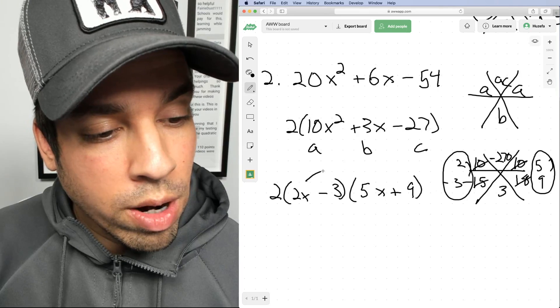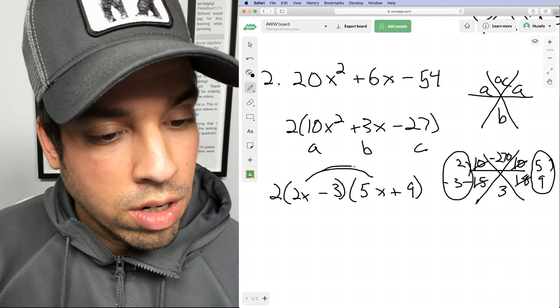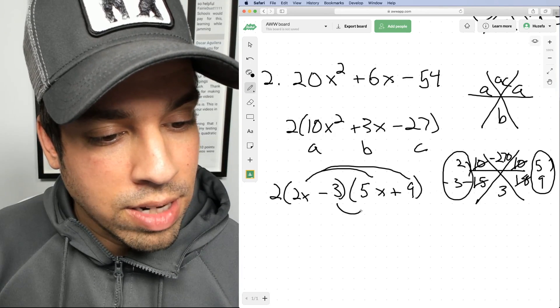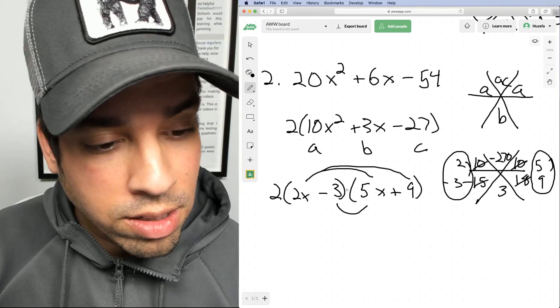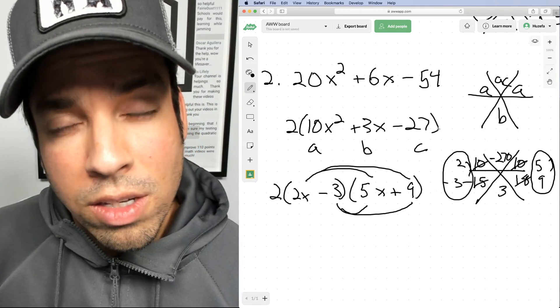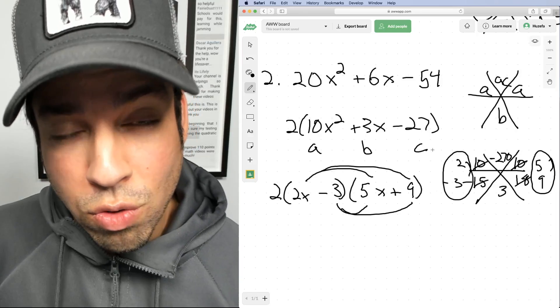And just to verify, you can refoil, right? We get 10X squared. That works. We get 18X plus negative 15X. That gives me the 3X. And then last but not least, we get that negative 27. So we know this has been factored correctly.